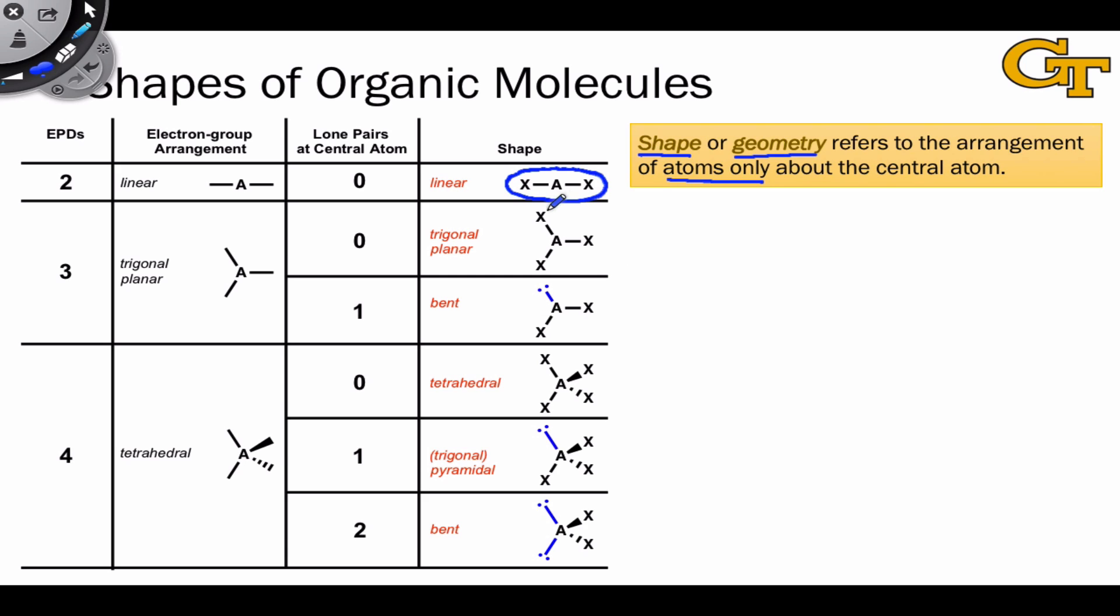But in the trigonal planar geometry, we get an interesting situation where one of the Xs can be replaced by a lone pair. That leads to a somewhat different-looking geometry where we have the central atom with two outer atoms in what's called a bent arrangement, with a bond angle of 120 degrees. A classic example would be something like carbene, with a lone pair and two CH bonds. This is a bent molecule.